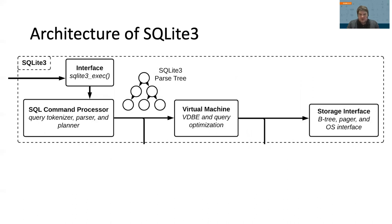Before we can discuss our approach, we describe the underlying architecture of SQLite 3, as our solution has to work in this framework. SQLite 3 is simple in its conception. Many of the traditional query processing steps are grouped together as the SQL command processor, which receives queries and generates an SQLite 3 parse tree. This parse tree is passed to the virtual machine unit, which both optimizes and translates the query into virtual database engine instructions. Over the course of this research, we attempted a number of different approaches.